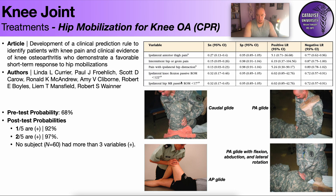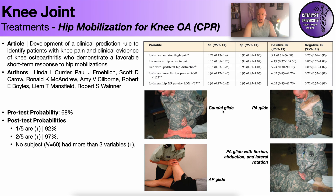You can see some examples of the treatments included in the study. They did caudal glides, AP glides, PA glides, and PA glides with some sort of flexion, abduction, or external rotation at the hip.